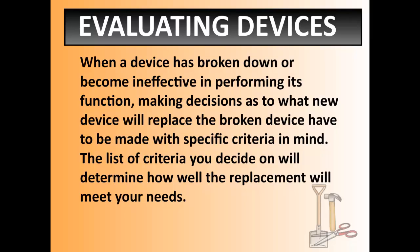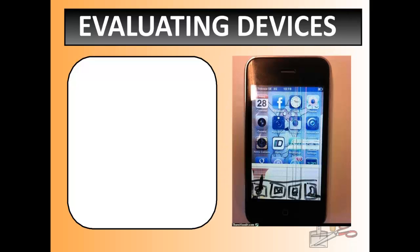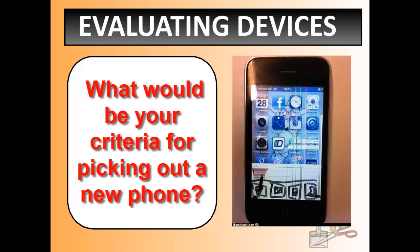So when a device is broken or your phone becomes ineffective or it's not working, you have to make new decisions as to what you're going to use to replace it. Those decisions are based on a set of criteria. When this happens to your iPhone, what criteria or what selection process do you go through before purchasing a new phone?